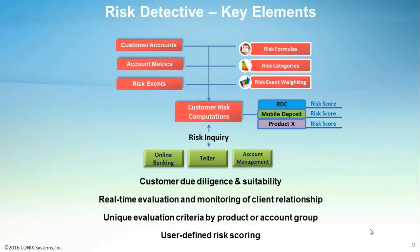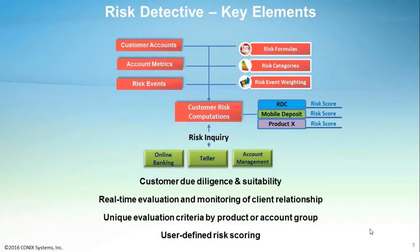Risk events are user-defined and can be any occurrence that impacts the eligibility of the institution's customers negatively or positively. Risk events can be logged via API calls or file imports from other systems. Some examples include standard return reasons, such as NSFs or duplicate payment occurrences, stop payments, daylight overdrafts, or alerts from fraud or other systems. When a risk event is defined, a weighting factor is assigned that represents the relative positive or negative impact to the client's risk score.